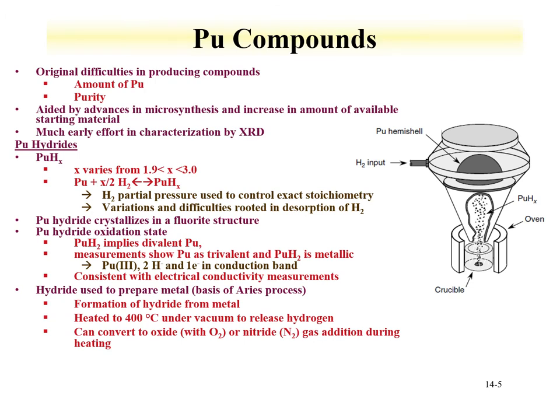Now that we've discussed plutonium metal, we can begin evaluating plutonium compounds. There was originally a difficulty in producing plutonium compounds for two main reasons: plutonium was hard to obtain, and when obtained, its purity was not certified, making it difficult to study in pure form. Developing plutonium compounds has since been aided by microsynthesis techniques and greater material availability. Much effort, particularly early work, involved characterizing compounds by X-ray diffraction.